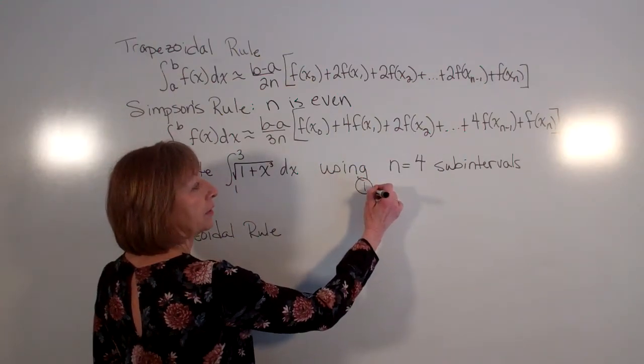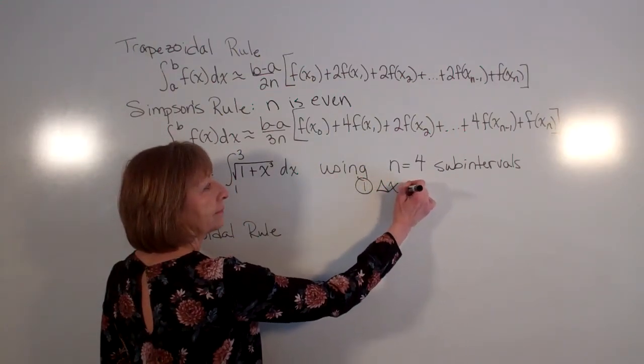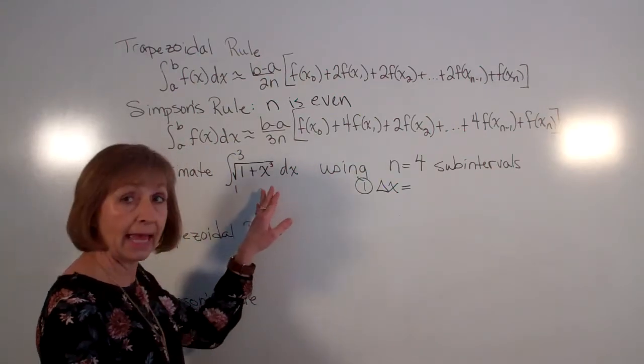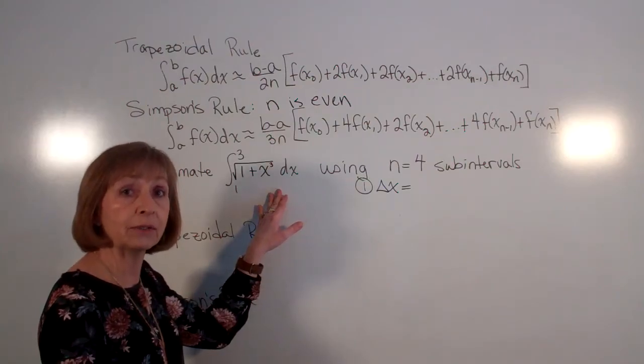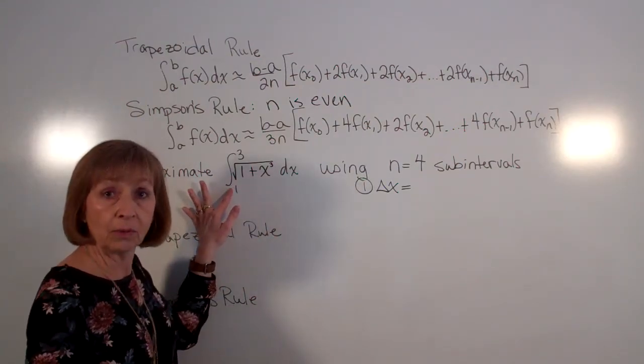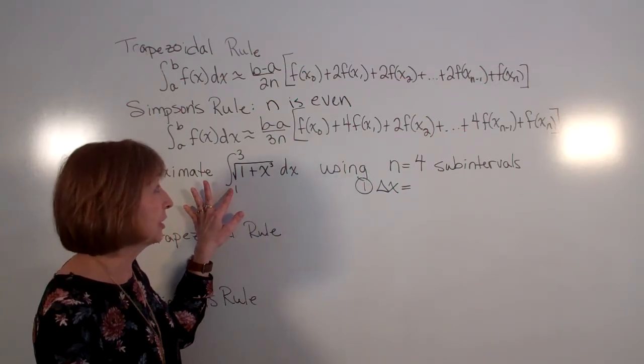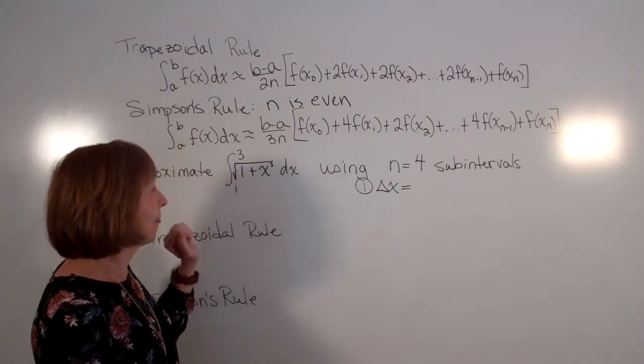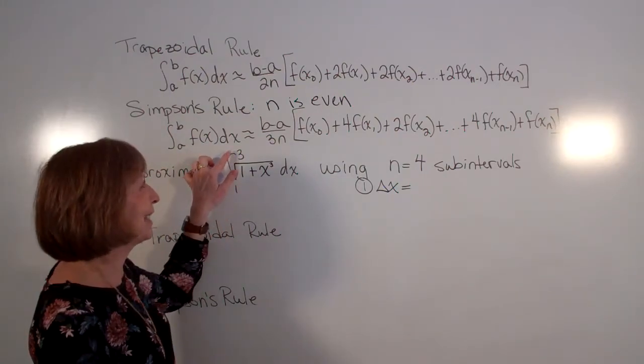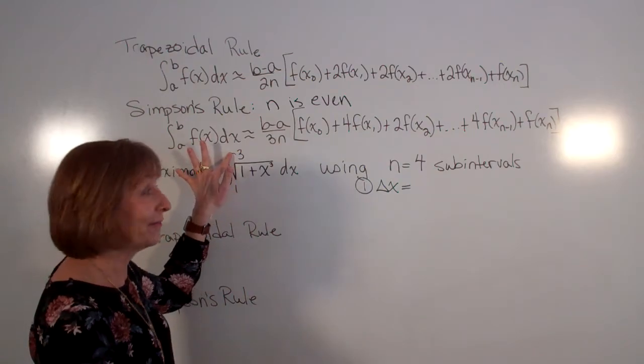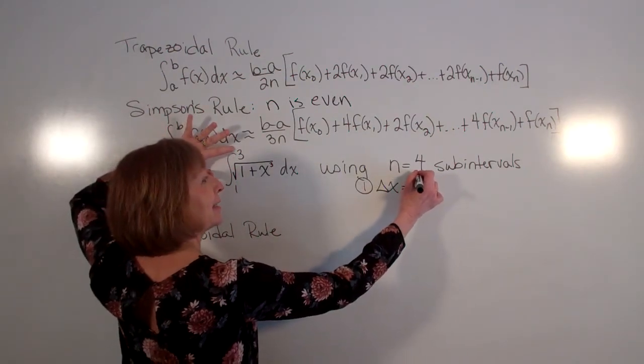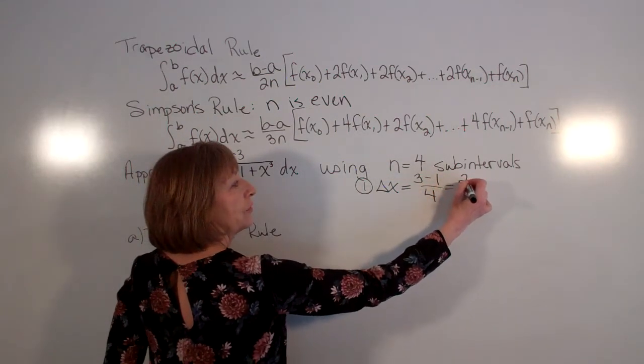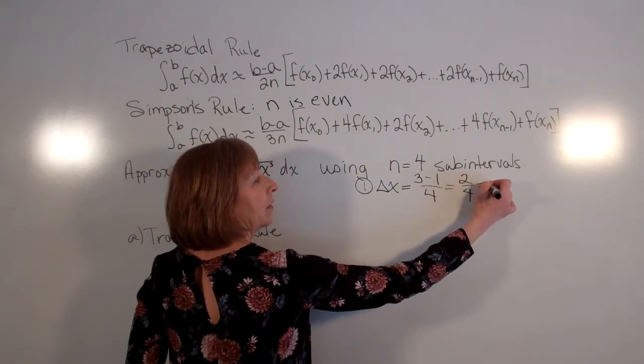Well, first for our delta x, our delta x is b minus a over n because we're taking our equal sub-intervals. a is the lower endpoint of integration, b is the upper endpoint of integration. So my delta x is 3 minus 1 over 4. So that gives me 2 over 4 or 1 half.